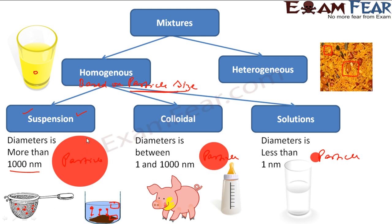The next example is solution. In a solution, the particle size is very very small — less than 1 nanometer. Since it is less than 1 nanometer, even light will not be able to scatter. The particles are so small that they won't scatter light, and they are almost invisible. Since they are very small, they don't settle because these particles move at a very high speed internally.